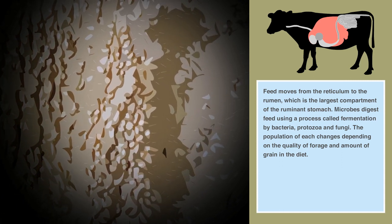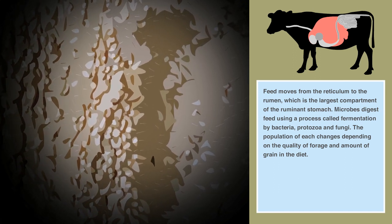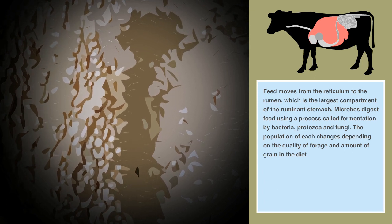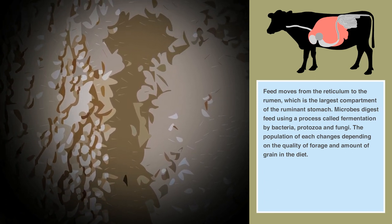Microbes digest feed using a process called fermentation by bacteria, protozoa, and fungi. The population of each changes depending on the quality of forage and amount of grain in the diet.